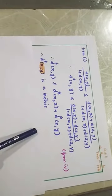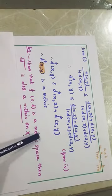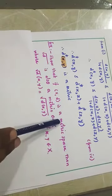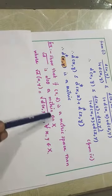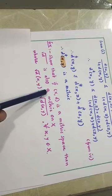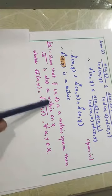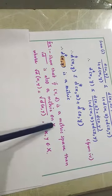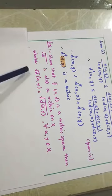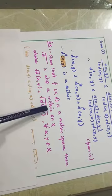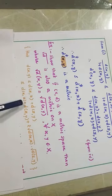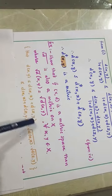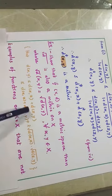Now, here is one practice problem: if (X, D) is a metric space, then √D is also a metric, where √D applied on (x,y) is defined as the positive square root of D(x,y). The first three conditions are straightforward. A hint is provided on how to prove the triangular inequality for this case.